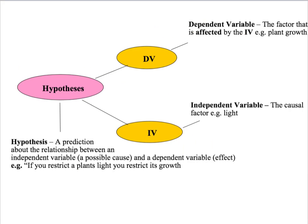Experiments begin with a prediction of how one factor will affect another, and the technical term for this prediction is a hypothesis. In the simple experiment just described, our hypothesis is: if you restrict a plant's light, you restrict its growth. The causal factor that you are manipulating — the thing you are changing, which in our case was the amount of light plants are exposed to — is technically known as the independent variable, or IV. The dependent variable is the factor that is affected by the independent variable; in our experiment, plant growth is the dependent variable.